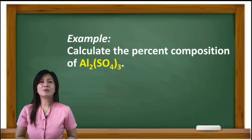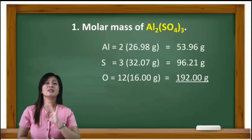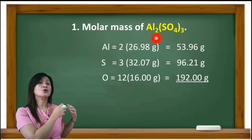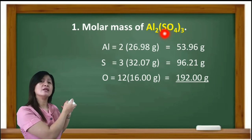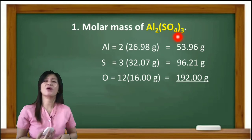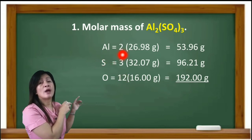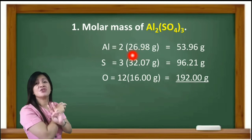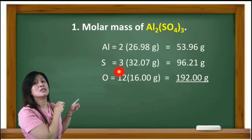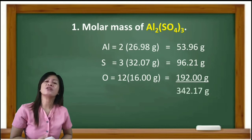Another example: calculate the percent composition of aluminum sulfate. Aluminum sulfate has three constituent elements — aluminum, sulfur, and oxygen. From the subscripts: 2 aluminum atoms, 3 sulfur atoms, and 12 oxygen atoms (4 × 3). Multiply by atomic masses: aluminum 2 × 26.97 g = 53.96 g; sulfur 3 × 32.07 g = 96.21 g; oxygen 12 × 16 g = 192 g. The molar mass of the compound is 342.17 g.